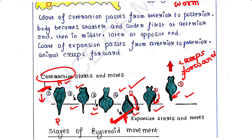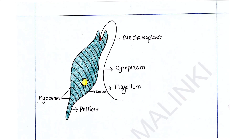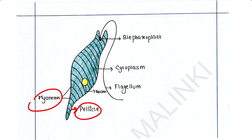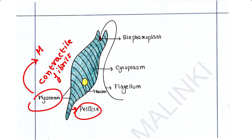The question is: how does the body get energy for locomotion, and which part of its body works like muscle? The pellicle is the outermost structure of Euglena. Below the pellicle in the cytoplasm are myonyms, which are contractile fibrils or fibers. Myonyms act like muscle and help in the movement of Euglena.